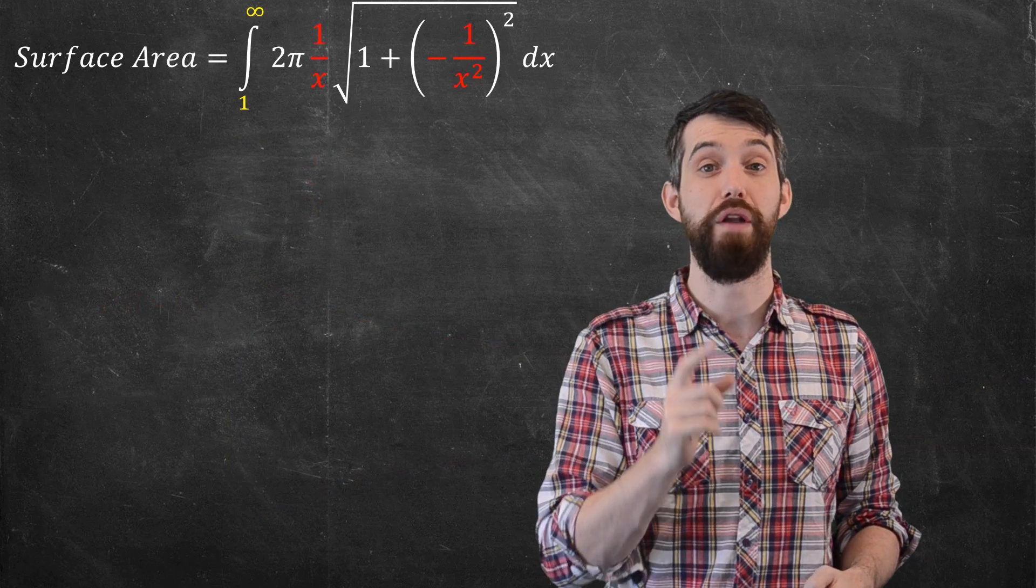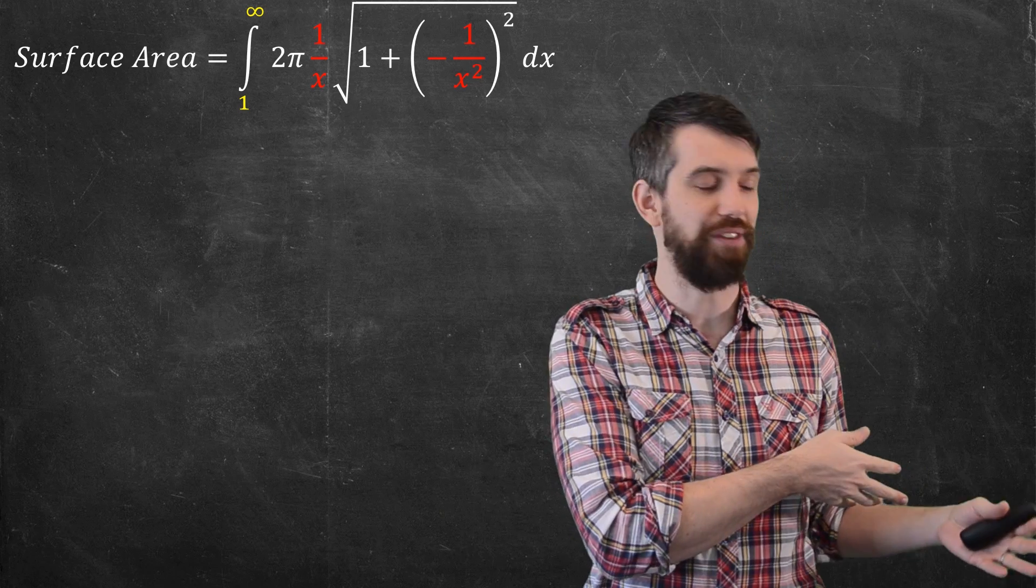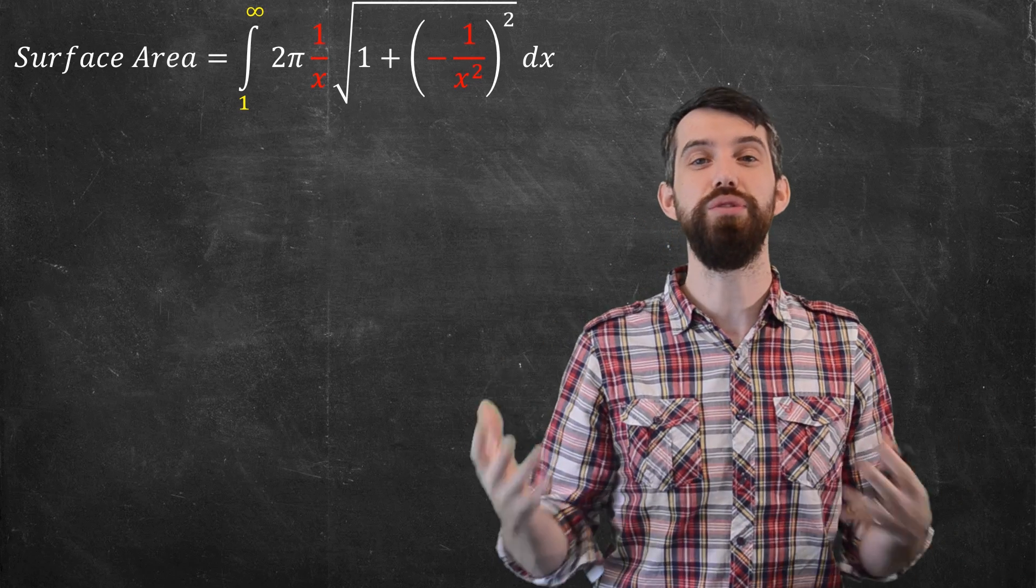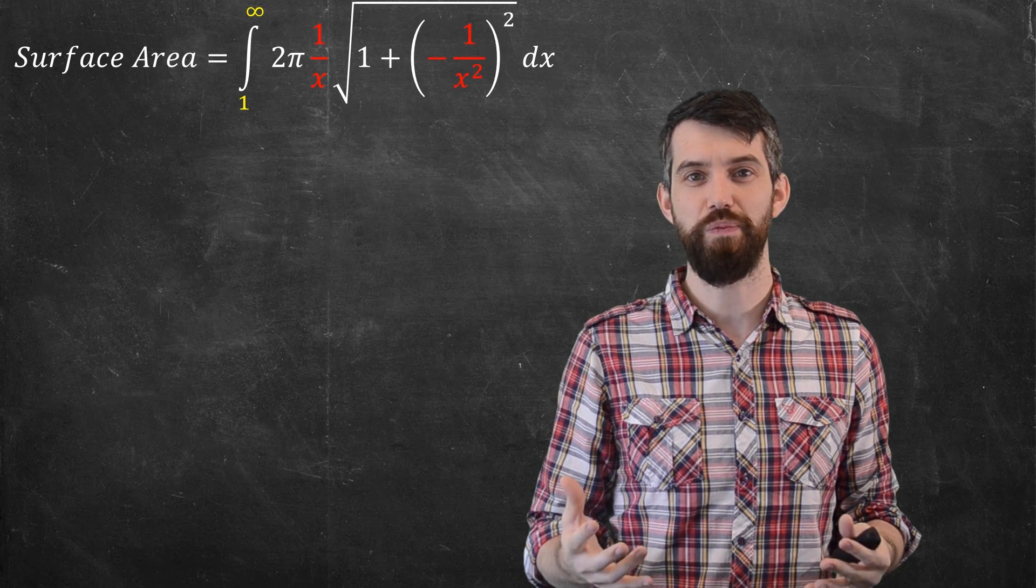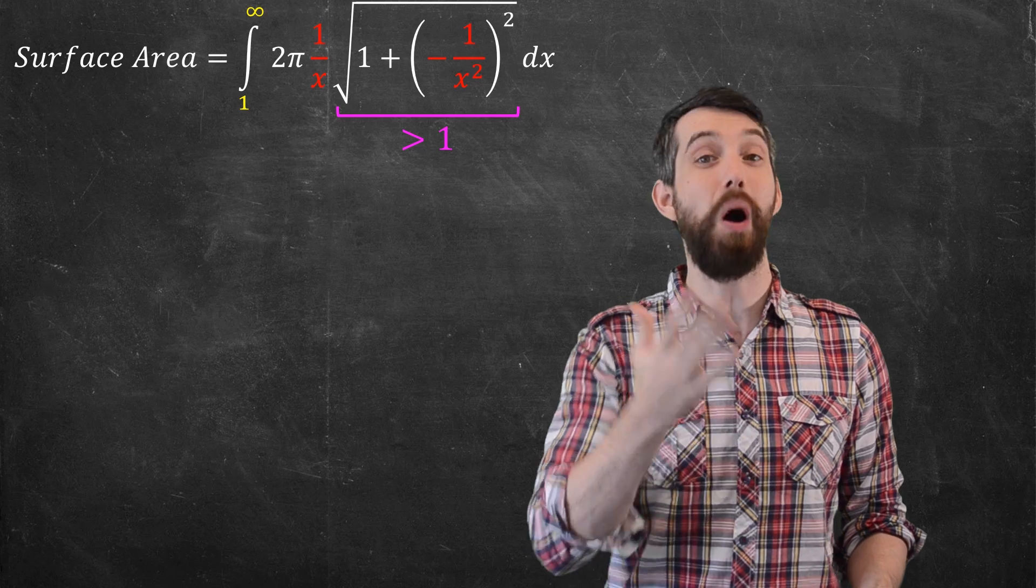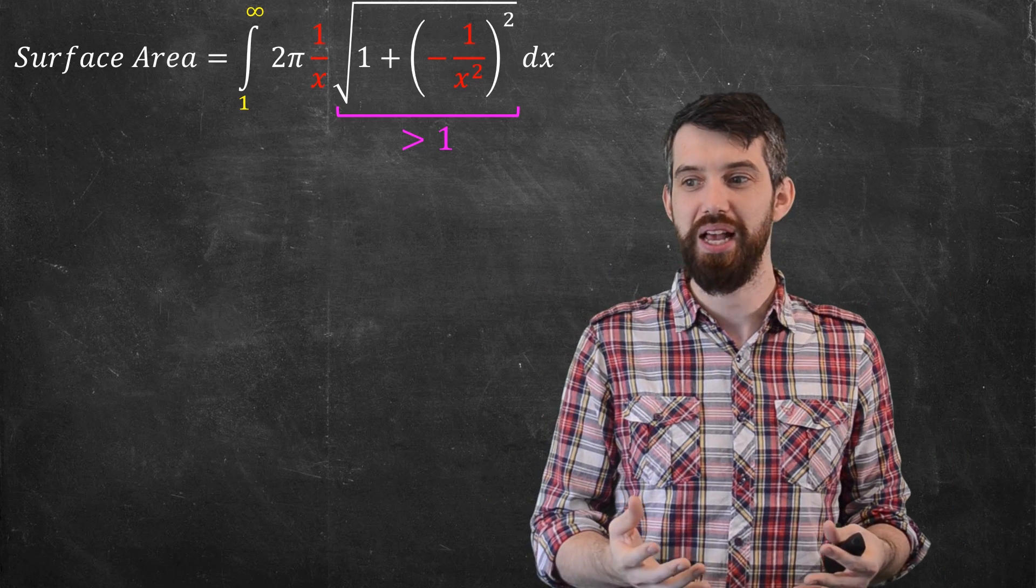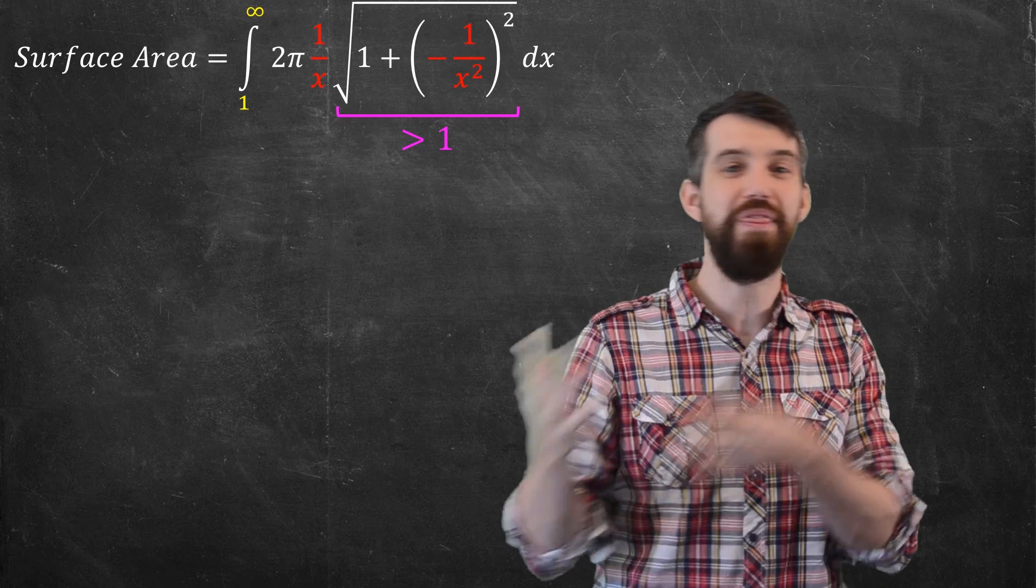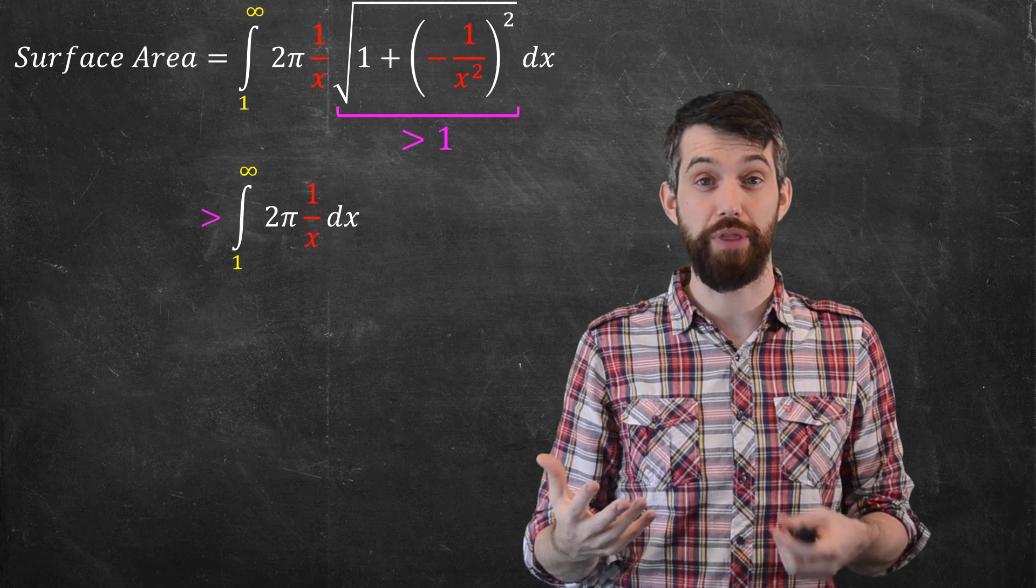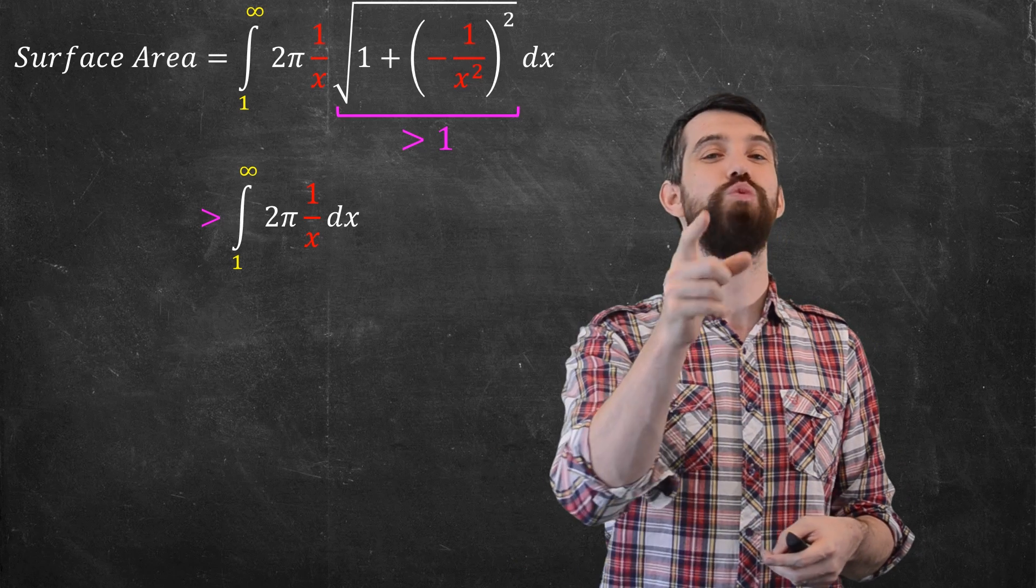Let's do the surface area one first. So, this is an improper integral. So, I can use the comparison test. If all I care about is whether it converges or whether it diverges, then I can use this comparison test. So, what I'm going to do is, you see the big square root stuff? All of that is actually positive. I don't know exactly what the positive number is, but it's always bigger than 1, because the derivative part is squared, and then you add that to 1. So, this is for sure something bigger than 1. So, this improper integral that I have is bigger than the improper integral that's just 2 pi 1 over x.